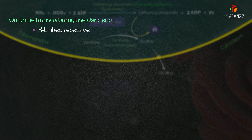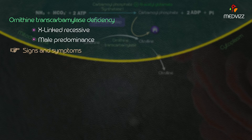Ornithine transcarbamylase deficiency is an X-linked disorder more commonly seen in males. Signs and symptoms are often evident in the first few days of life but may appear later.